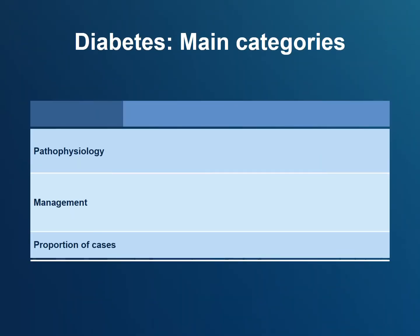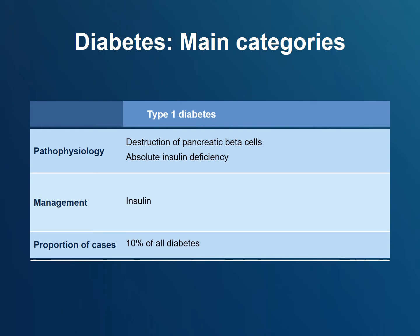Broadly speaking, there are two types of diabetes. Type 1 diabetes results from the permanent autoimmune destruction of insulin-producing beta cells in the pancreas, leading to a complete lack of insulin in the body — called absolute insulin deficiency. Therefore, people living with type 1 diabetes must always take insulin. Of all diabetes cases, 10% or less are from type 1 diabetes.